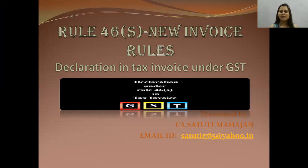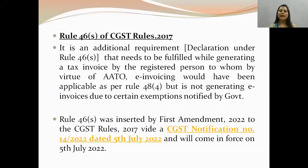Now we will see that there is Rule 46S. They have inserted Rule 46S. It is an additional requirement — declarations under Rule 46S. It is an additional requirement that needs to be fulfilled while generating a tax invoice by the registered person to whom, by virtue of AATO, e-invoicing would have been applicable as per Rule 48(4), but who is not generating e-invoices due to certain exemptions notified by the government.